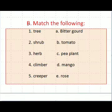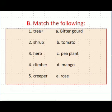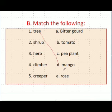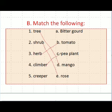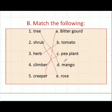Now we will do B question — match the following. Climber is number 3, and creeper is A, so this is B. Match the following is complete.